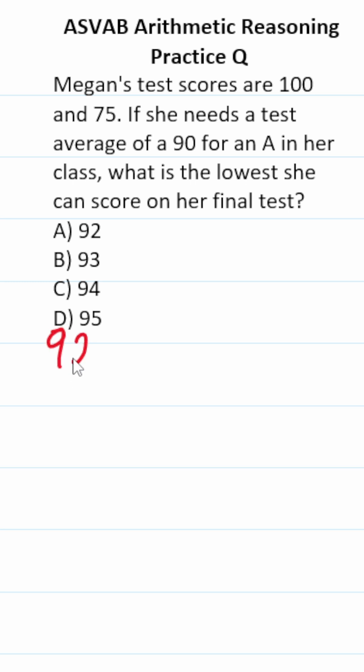So she wants an average of 90. And so far, she scored 100 as well as 75. We're going to use X to represent the unknown score on her final test and divide that by 3.